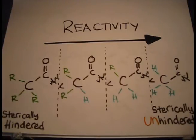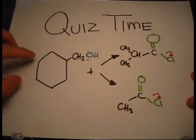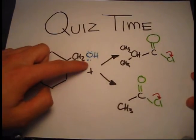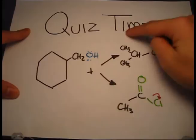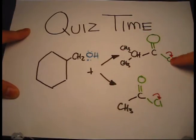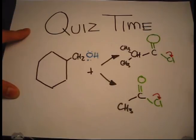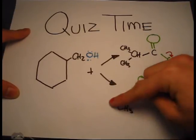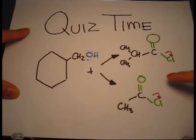To see if you understand what I'm talking about, let's do a quick quiz. I've got this nucleophile here and he's looking to mingle. Which one do you think he'll react with — the first molecule over here, or this other one? Remember what we talked about: one that's more sterically hindered, surrounded by big groups, or one that's not. What do you think? Just choose one — one or two.